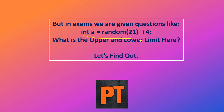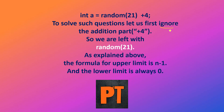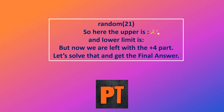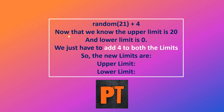Next exam question: int a = random(21) + 4. How do we do this? First, ignore the addition part. Just take the number 21 and apply n-1: upper limit is 21 minus 1, which is 20, and lower limit is 0. Now we are left with plus 4. We add 4 to both limits — upper limit becomes 20 plus 4, which is 24, and lower limit becomes 0 plus 4, which is 4.